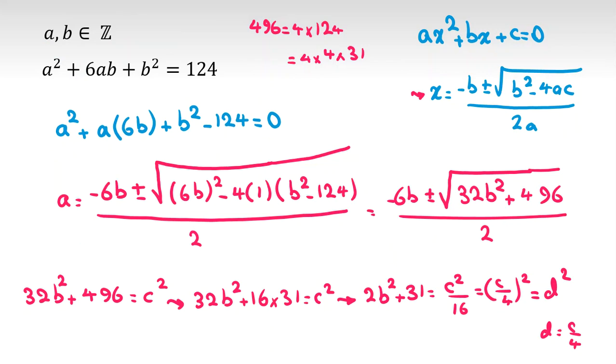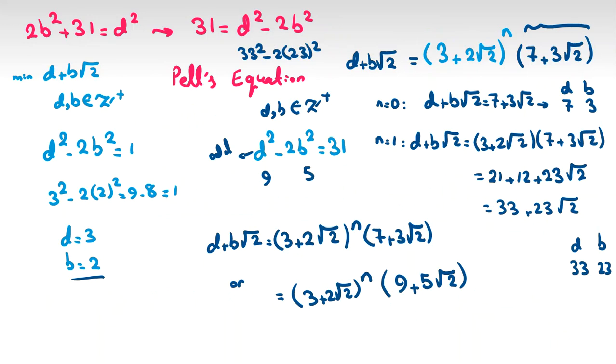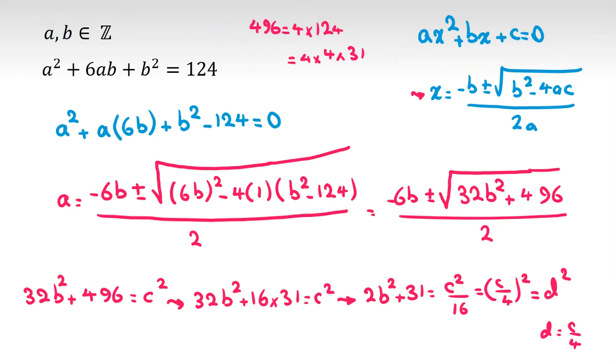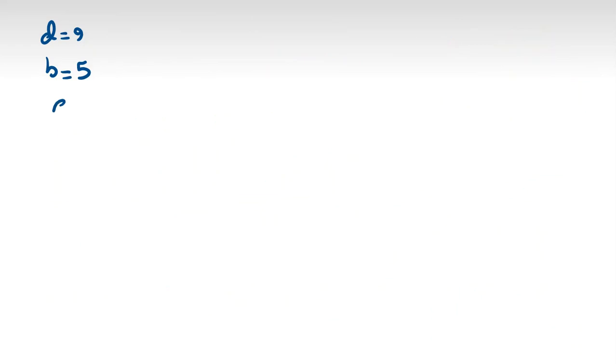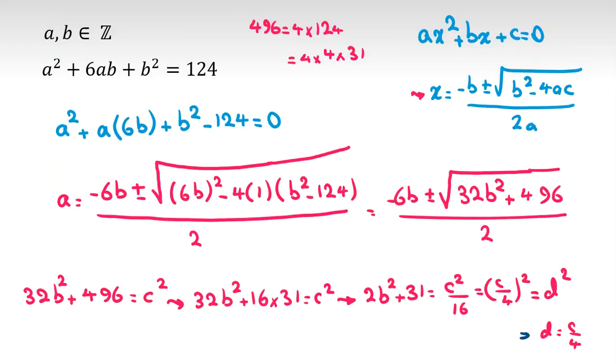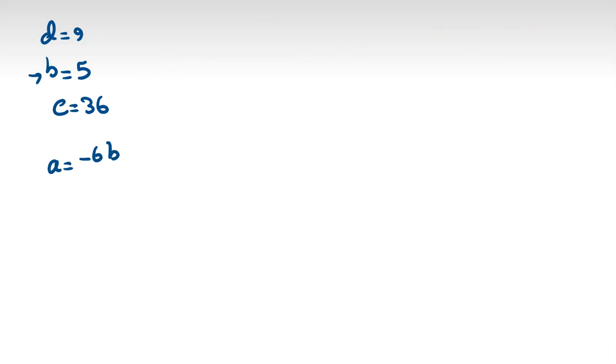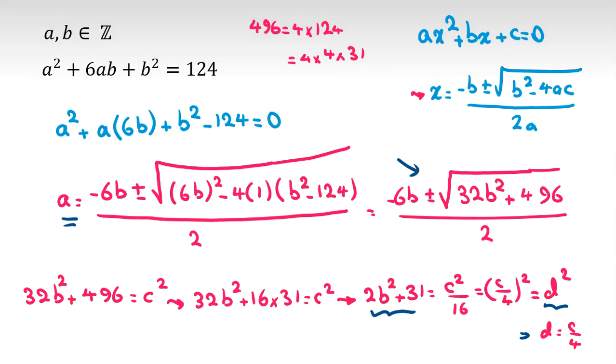Let's check for example some of them - the general form. For example, let's consider 7, 3 or d equals 9, b equals 5. Let's check this. So d is 9, b is 5. d was c over 4, so c is 4 times d which equals 36. Now c is this, so I want to find a.